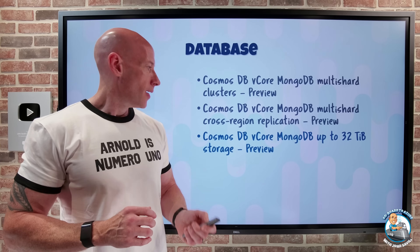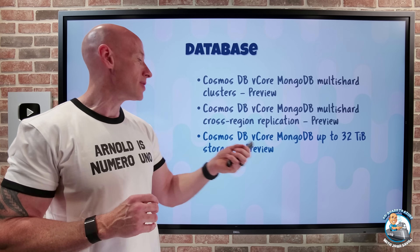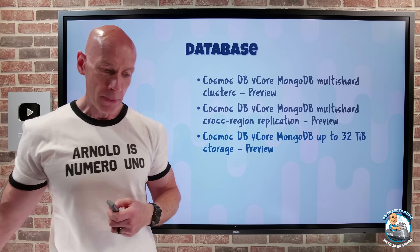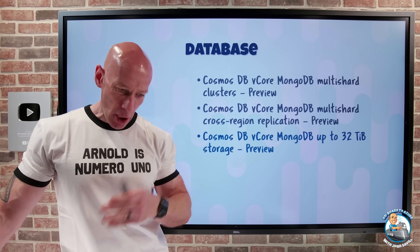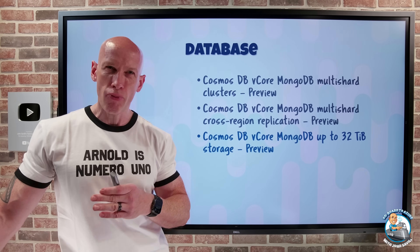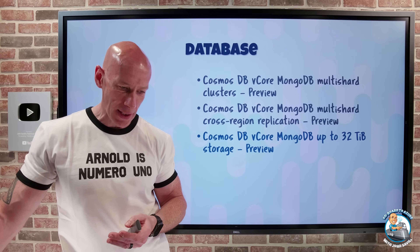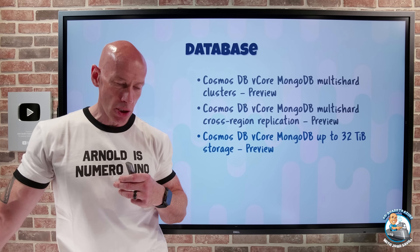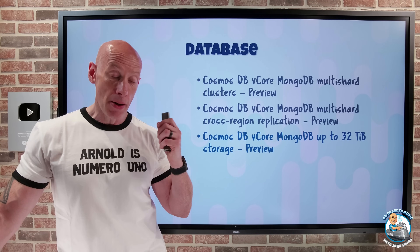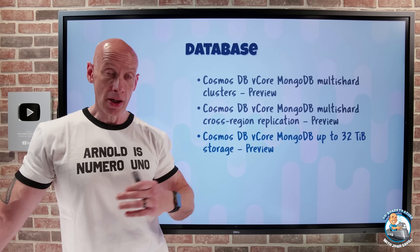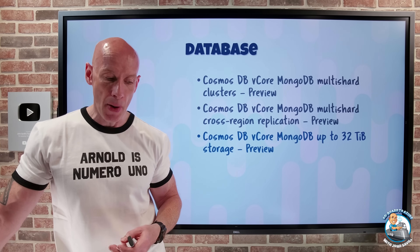Cosmos DB vCore MongoDB is now up to 32 TB of storage. You can choose from 8, 16, or 32 TB, with appropriate IOPS of 16,000, 18,000, and 20,000 respectively. So now you can have bigger databases — and if you combine that with sharding, you could exceed 100 TB in total.